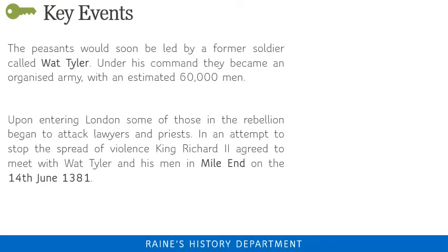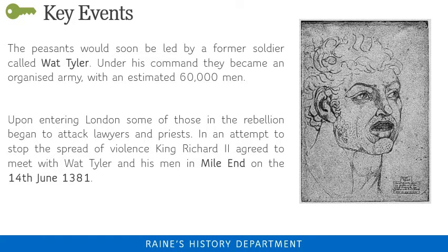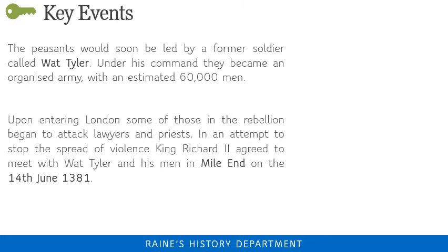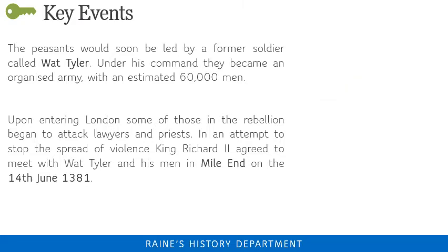This group of peasants would soon have a leader — a former soldier called Wat Tyler. Under his command they became an organised army with an estimated 60,000 men. On their way to London, they are believed to have destroyed tax registers and government buildings, even removing the heads of tax collectors. Upon entering London, some of those in the rebellion began to attack lawyers and priests. In an attempt to stop this spread of violence, King Richard II agreed to meet with Wat Tyler and his men at Mile End on 14 June 1381.